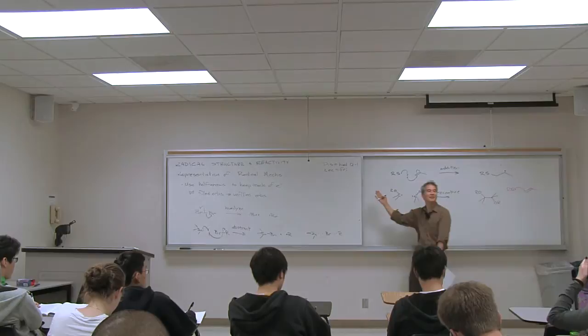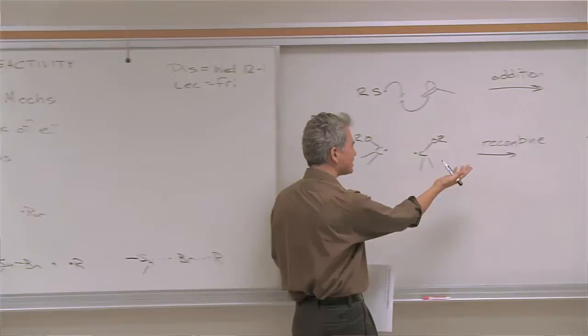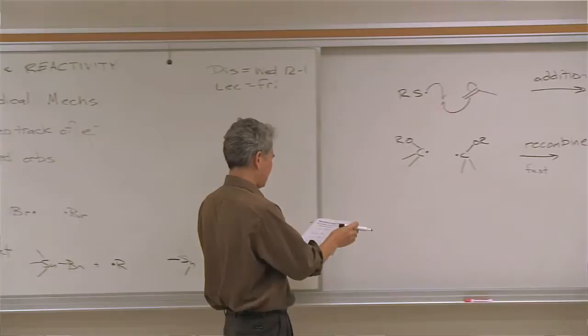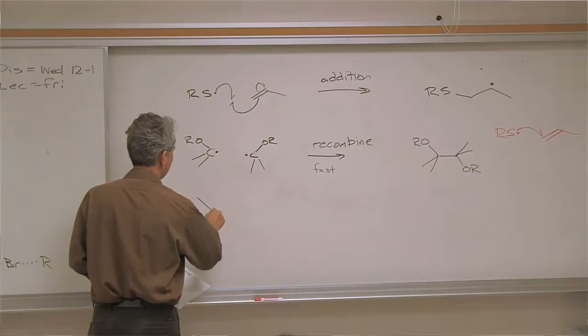Carbon wants an octet of electrons, and whenever carbon radicals can combine together to form a bond, you satisfy the octet rule for both atoms. Radical recombination events are always fast — specifically when they form carbon–carbon bonds and most other types of bonds. There are a few exceptions to that.